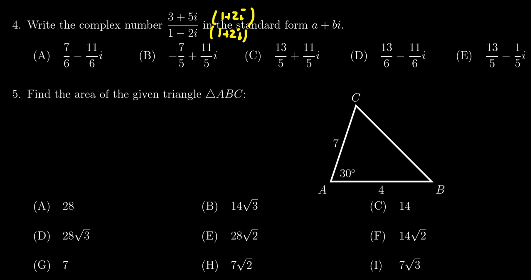So you get 1 minus 2i times 1 plus 2i. In the denominator, you're always going to get a sum of squares. That is, you'll take the real part squared and the imaginary part squared, so you get 1 squared plus 2 squared, like so. And as you're squaring it, it doesn't matter what the sign is.